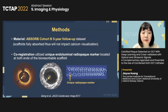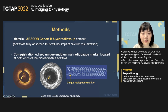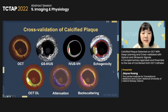In our study, the ABSORB cohort B 5-year follow-up data were analyzed. When the scaffolds had been fully absorbed, they would not impact calcium visualization. Co-registration between OCT and IVUS was performed using the unique radio-opaque marker embedded at both ends of the bioresorbable scaffold. Calcified plaque detected by OCT deep learning was cross-validated with optical properties including light attenuation and backscattering, grayscale IVUS, IVUS virtual histology, and echogenicity.